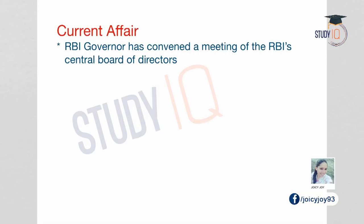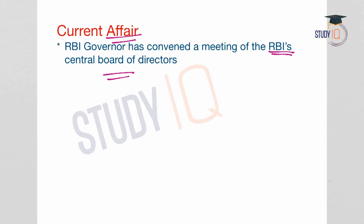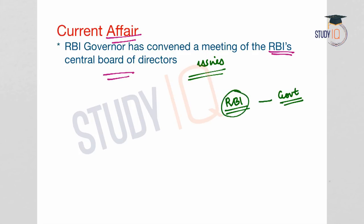Let us first see what is the current affair associated with RBI's Central Board of Directors. RBI Governor Mr. Urjit Patel has convened a meeting of the RBI's Central Board of Directors, and this meeting is aimed at discussing various issues that are going on. There is an ongoing tussle between the RBI — the Reserve Bank of India, the monetary authority of the country — and the government. Therefore, this meeting of the RBI's Central Board of Directors is important, and we should also understand the roles and functions of the Central Board of Directors.